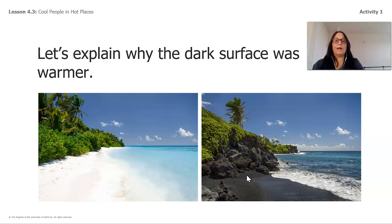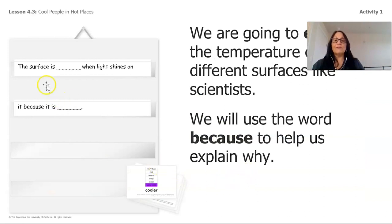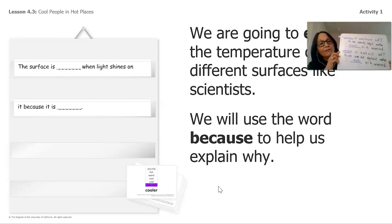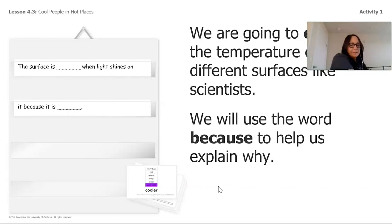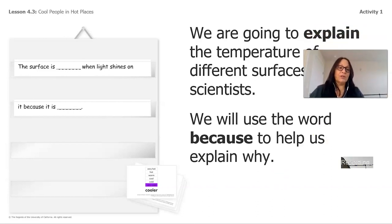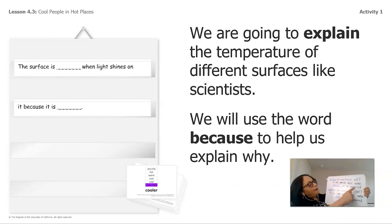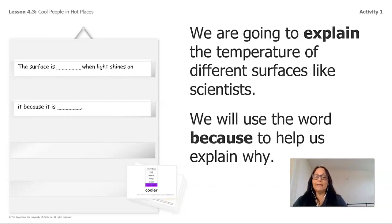Here we can see the pale side and the dark side. Let's explain why the dark surface is warmer. The sentence frame says: the surface is warmer when light shines on it because it is dark. That completes our sentence frame. You did such an amazing job—I can hear you giving all those right answers. I'm really excited to hear all this learning going on.